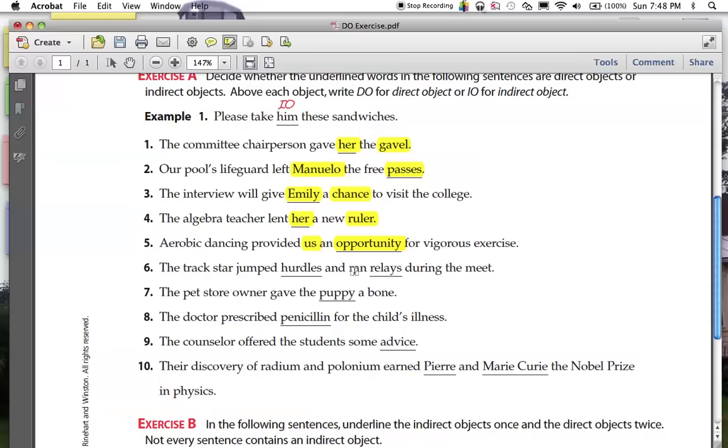The track star jumped what? Relays and hurdles. Those are direct objects because it's what being jumped. Now, remember, for it to be an indirect object, there would have to be something right between jumped and hurdles. And it just ain't there. So no indirect object in six.